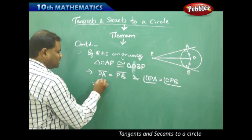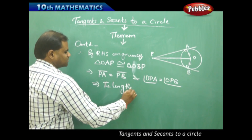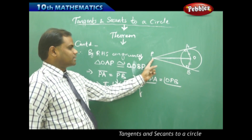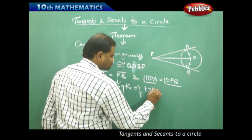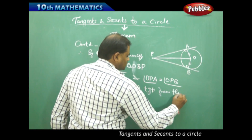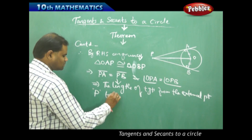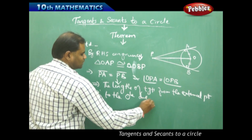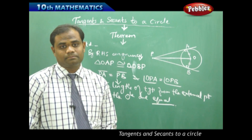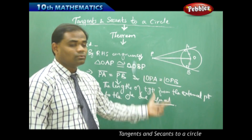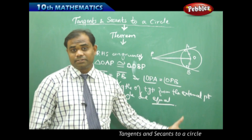PA equal to PB implies that the lengths of the tangents from an external point P to the circle are equal. This is what we conclude with the statement of the theorem, established through RHS congruency of the two triangles.